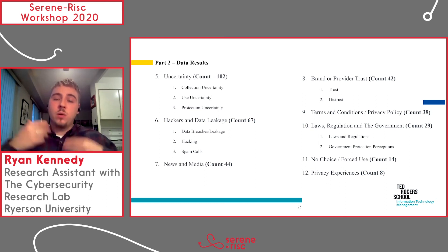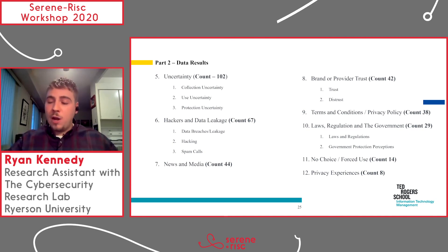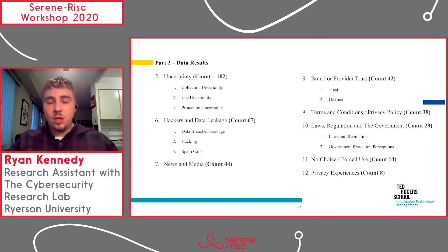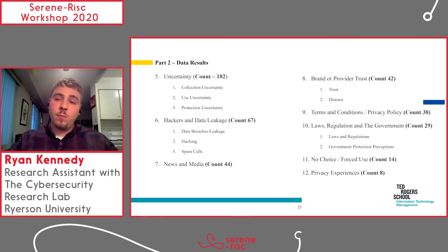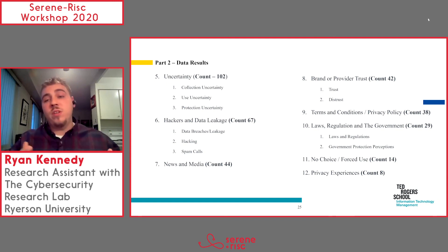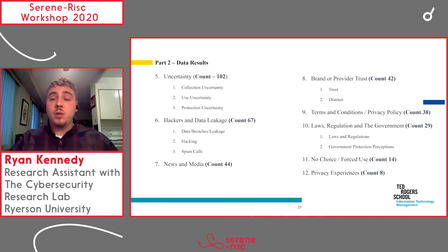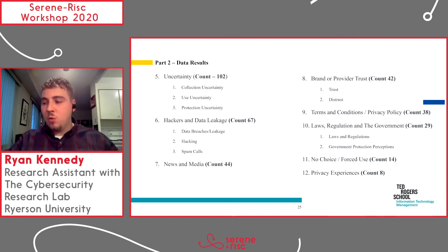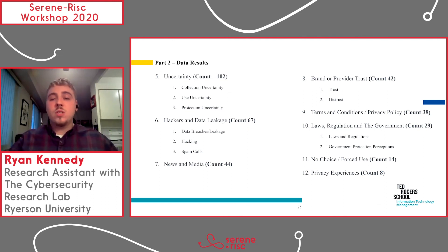Eighth was brand and provider trust — with Apple trusted more, though some did not trust Apple. Ninth was terms, conditions, and privacy policies, which are meant to provide security and agreement between user and organization, but were viewed negatively — people saw their complexity as an attempt to mislead. Tenth was laws, regulations, and governments, similarly meant to protect privacy, but most people don't trust the government and don't believe their regulations do much, and believe there are workarounds. Number 11 was no choice or forced use, and number 12 was previous privacy experience.